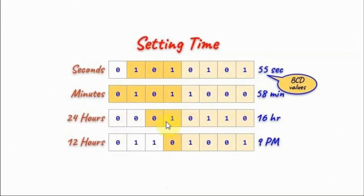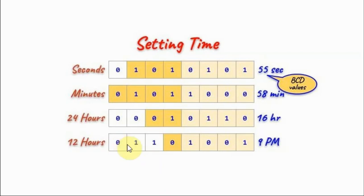As an example, to program the hours register for 24-hour mode and store 16 hours: we set the mode bit to 0, then 6 in BCD is 0110 and 1 in BCD is 01. For 12-hour mode storing 9 PM: we set the mode bit to 1 to indicate 12-hour mode, set the AM/PM bit to 1 for PM, and store the BCD value of 09, with 9 and 0 in their respective fields.